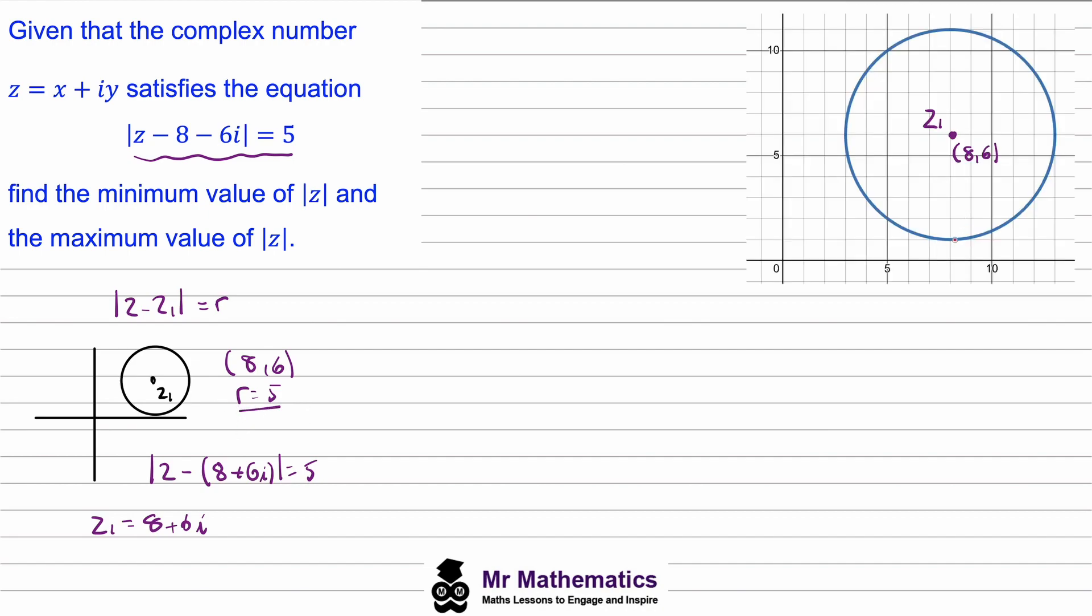We know that z must be at some point along the circumference of this circle and we've been asked to find the minimum possible magnitude of z and the maximum magnitude. So we know that z originates from the origin. So the minimum possible magnitude would be from the origin to approximately here. And this will be z min.